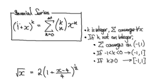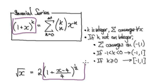If you look at this, we are ignoring the 2 for the time being. So if k is an integer, then the series will converge for all values of x.